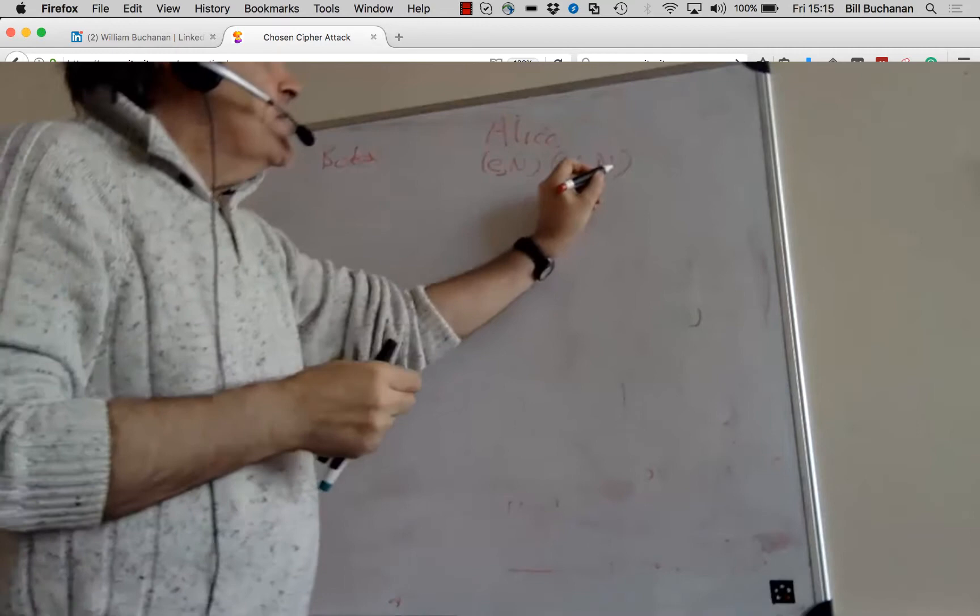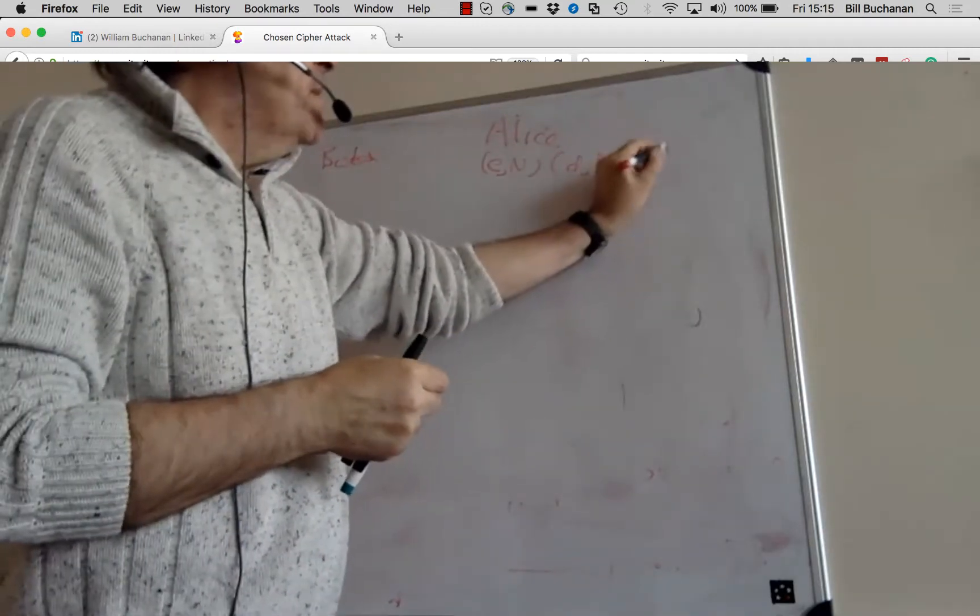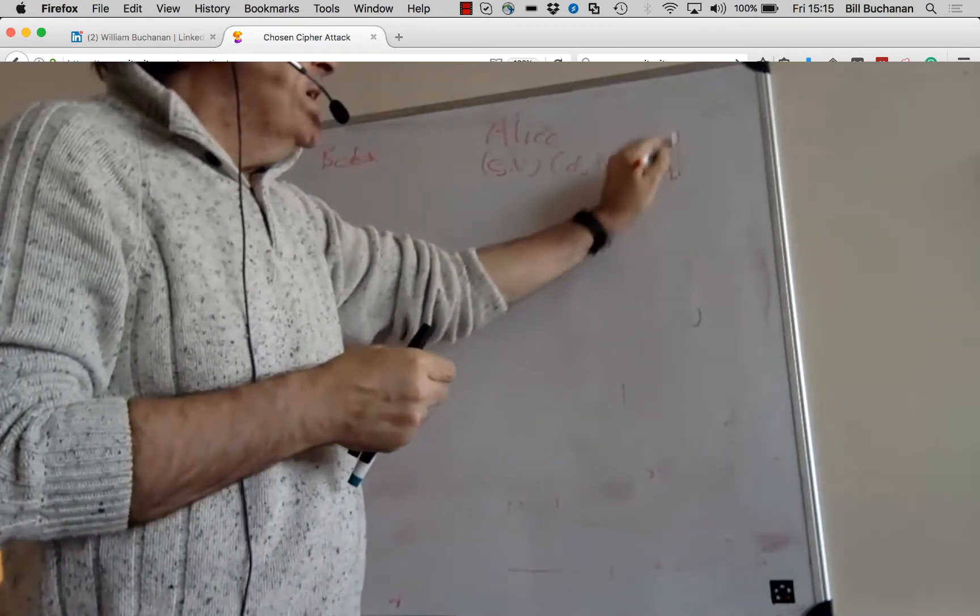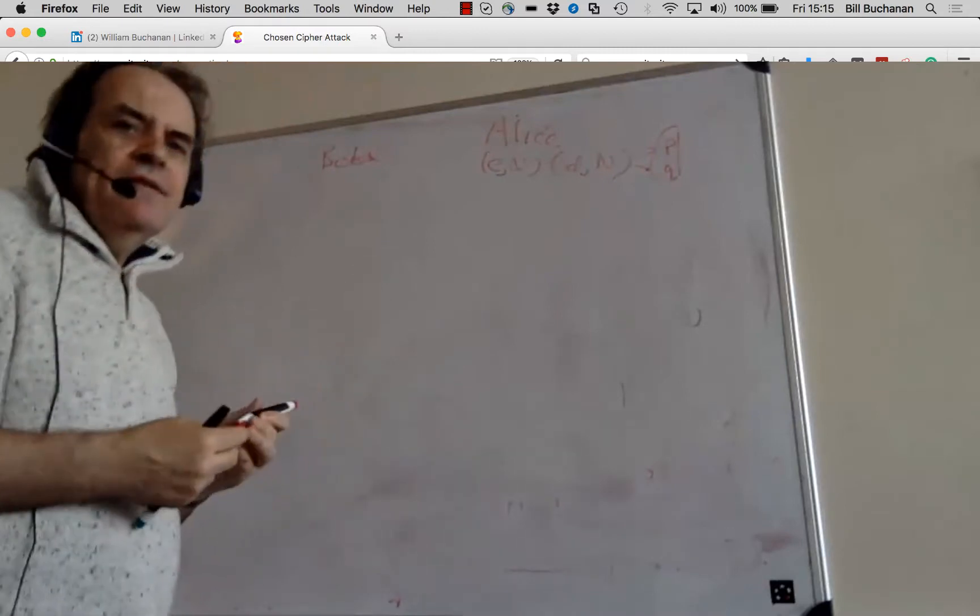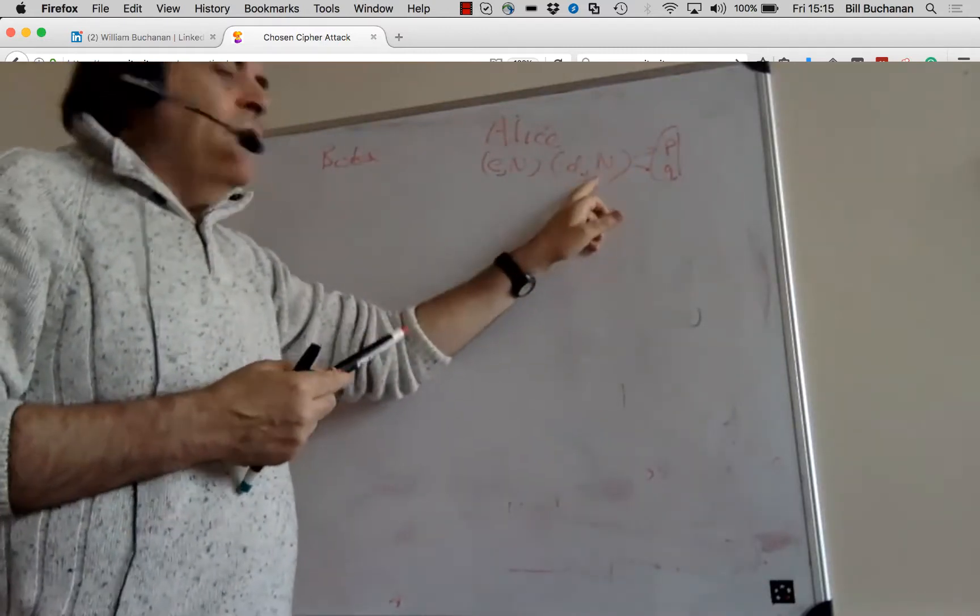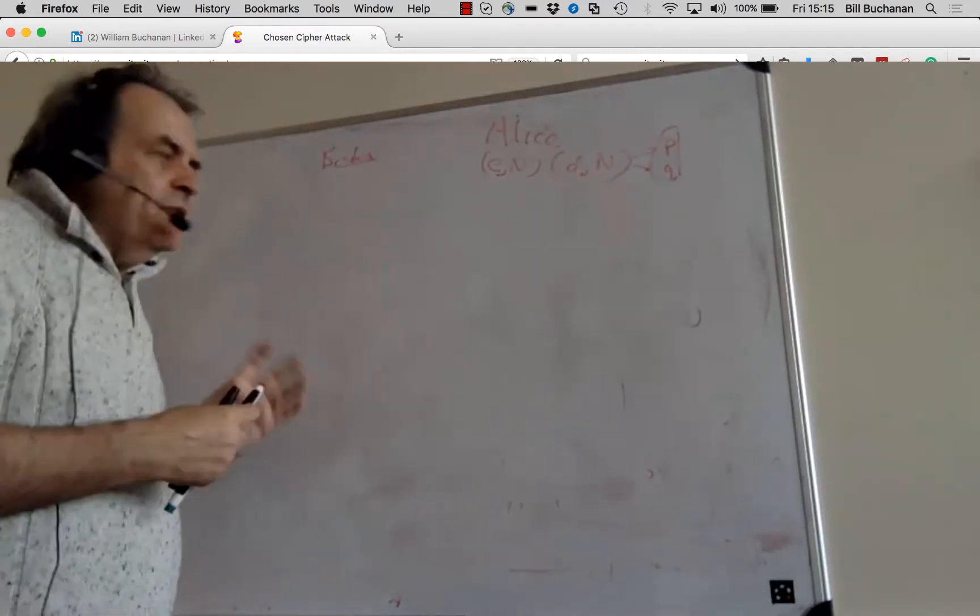N is the multiplication of two prime numbers, and hopefully it's difficult to find out those two prime numbers from the value of N because it's extremely large.